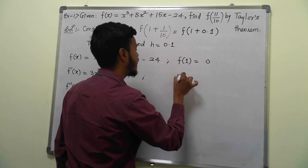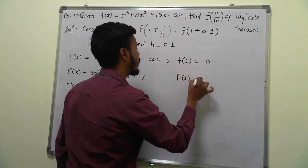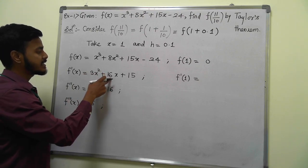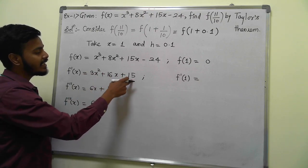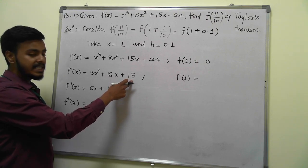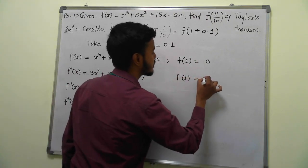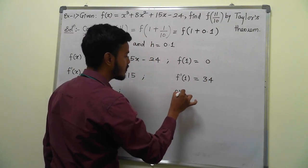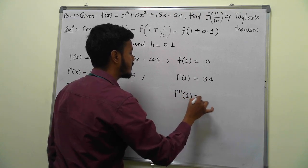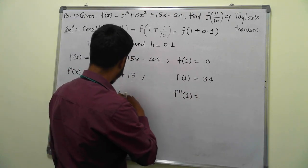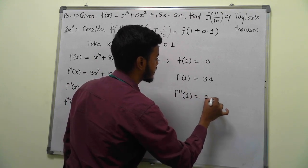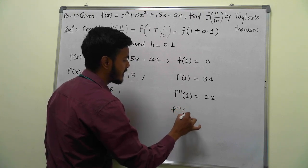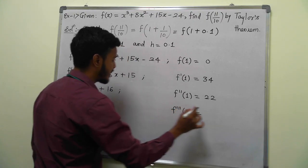Find f'(1): put x = 1, so 3 + 16 + 15 = 34. Then f''(1) = 6 + 16 = 22. And finally f'''(1) = 6.